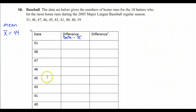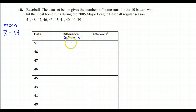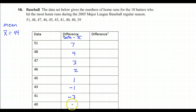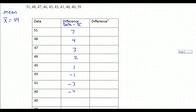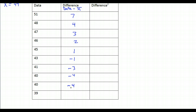Here I have all the data entered in the first column. Now we're supposed to find the difference in the second column — we take each data entry and subtract the mean. So 51 minus 44 is 7, 48 minus 44 is 4, and then we keep going to get 3, 2, 1, negative 1, negative 3, negative 4, negative 4, and negative 5. These are all the differences from subtracting the mean of 44.